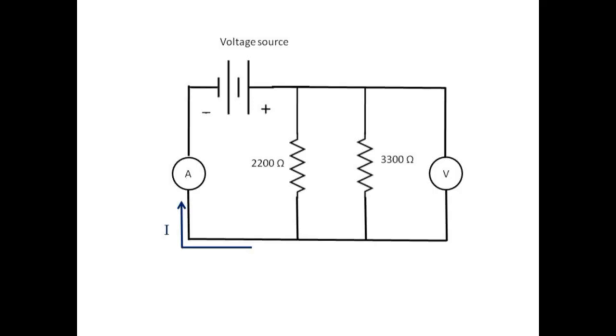Then we measure the current I1 through the first resistor. Finally, we measure the current I2 through the second resistor.